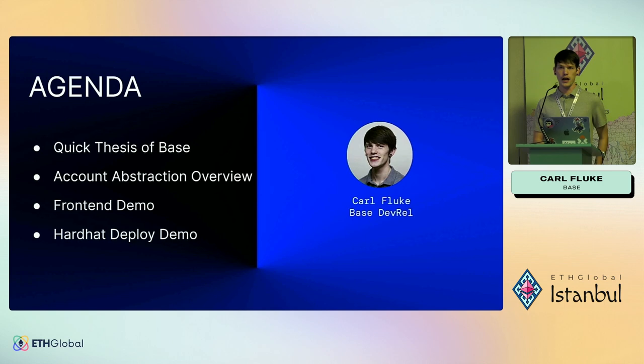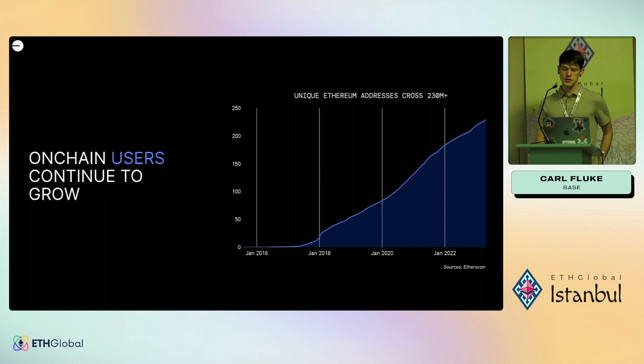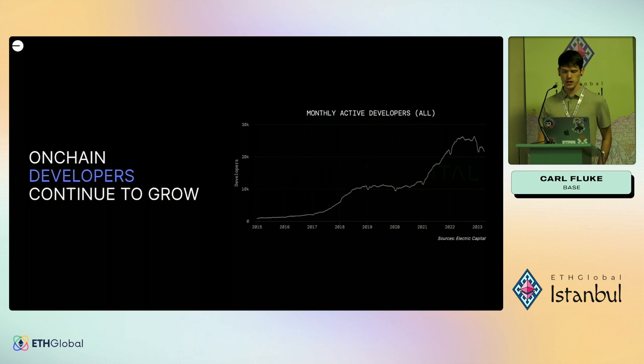One is with the front end — how does this make your end user have a better user experience? And then also as a developer, you can actually use smart contract wallets to deploy your contracts and there are some benefits to that. So first, I'll run through this quickly because I want to get into the code — why did we make Base? Coinbase has about 120–130 million retail users, and less than 5% of them are truly on-chain.